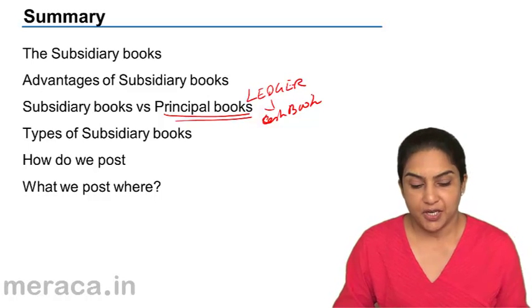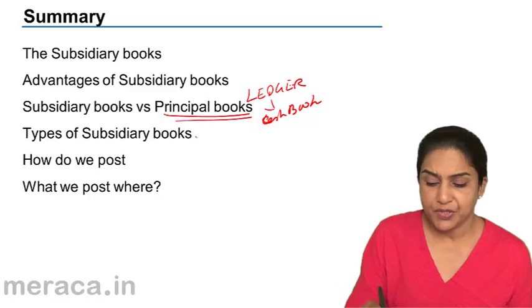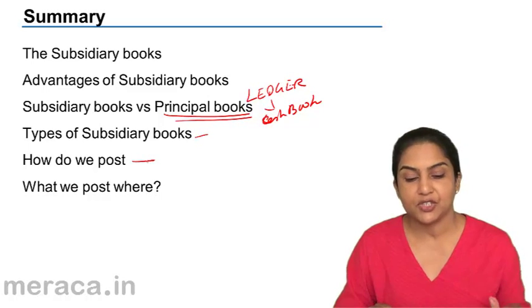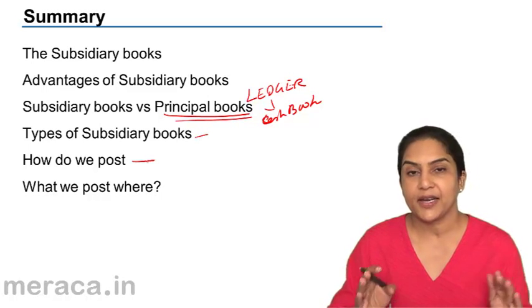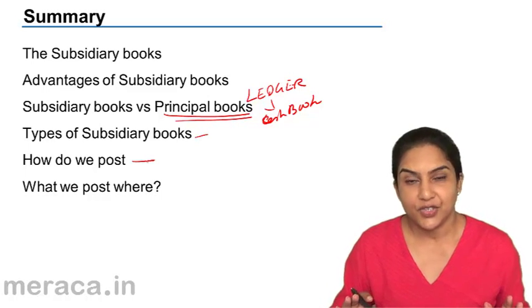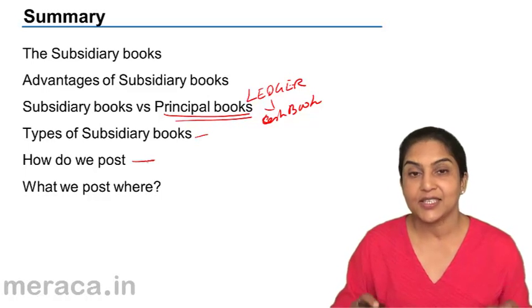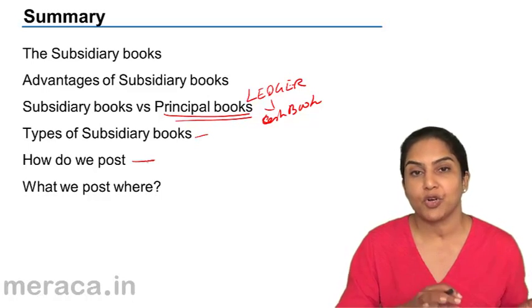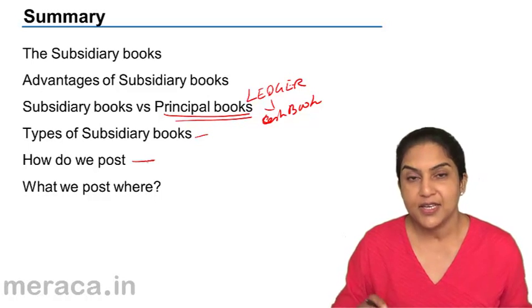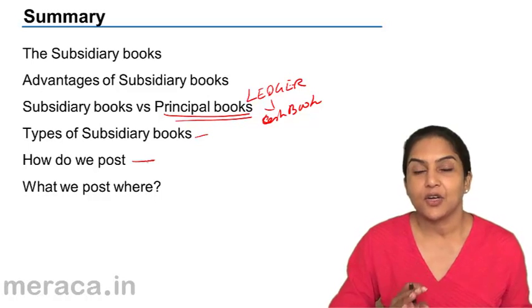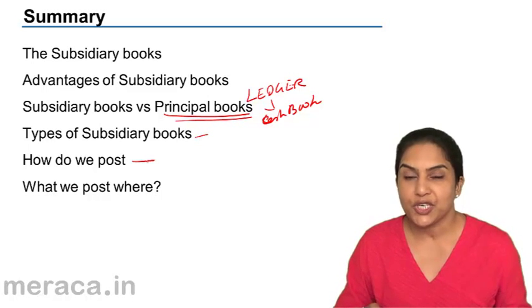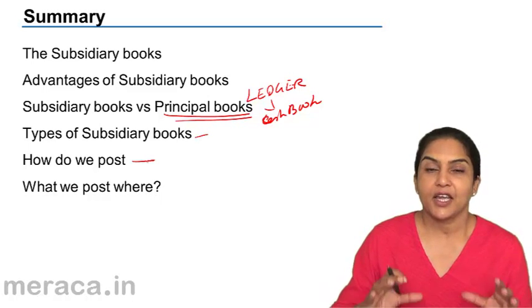Subsidiary books are called subsidiary because the ledger accounts are prepared on the basis of these subsidiary books — the principal books of accounts are prepared based on them. When posting, there is no debit or credit in the purchase day book, sales day book, purchase return book, or sales return book. It is understood that the purchases account will always be debited, the sales account always credited, sales return always debited, and purchase return always credited.